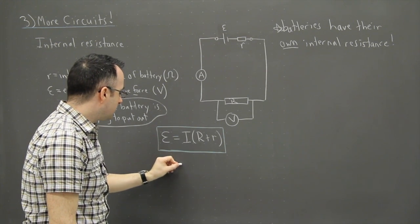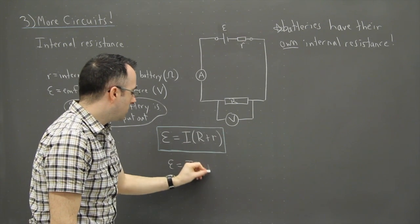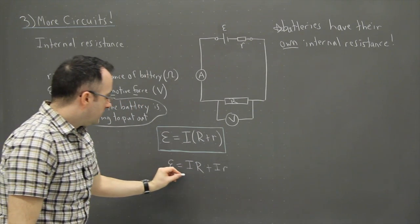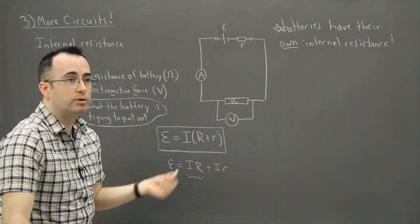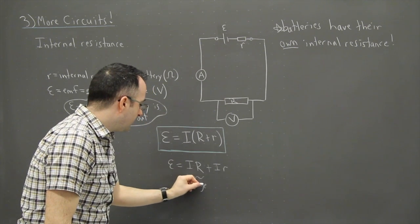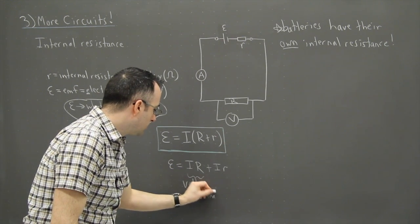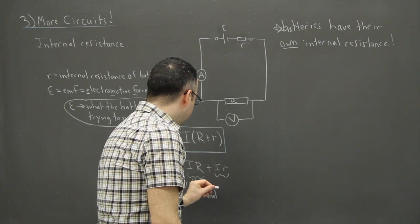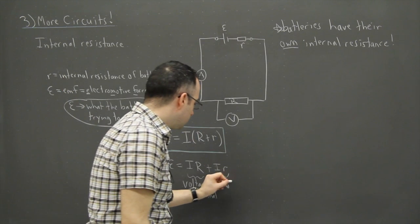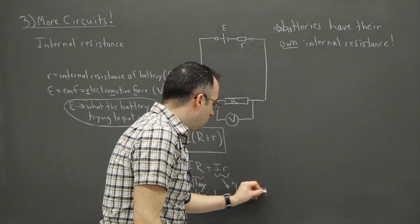I find this is maybe a little bit more useful to write it like this: EMF is going to equal I times R and I times little r. The way I think of it is that this is like the voltage at the terminal, this is like the real voltage, what ends up actually being used. This is like the usable voltage. And this right here is like the lost voltage.